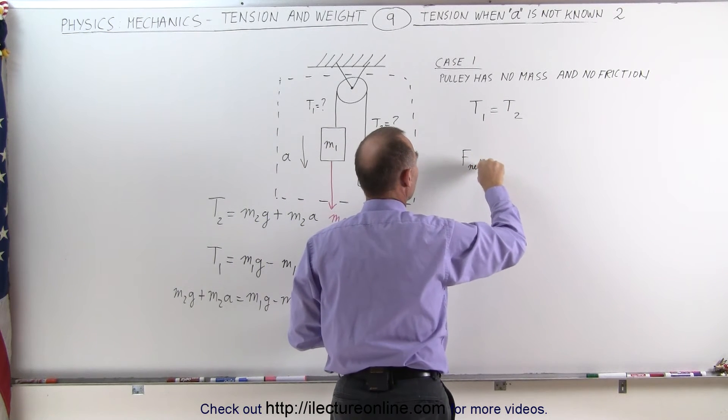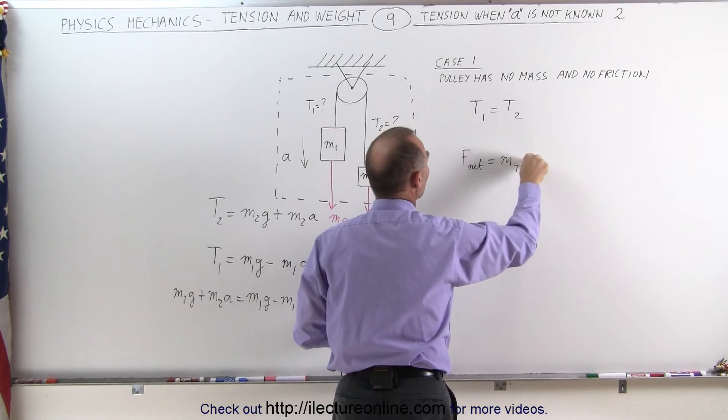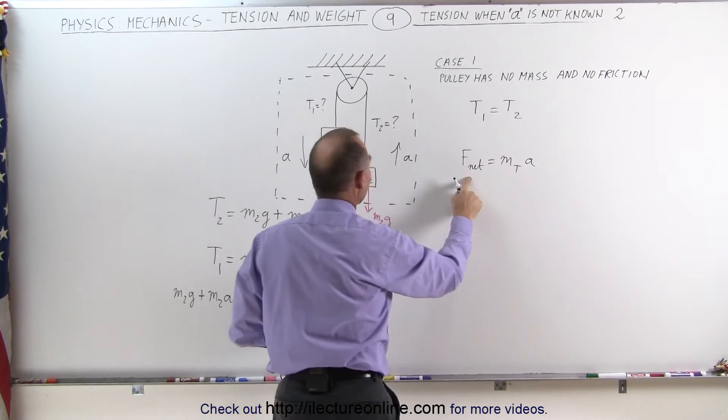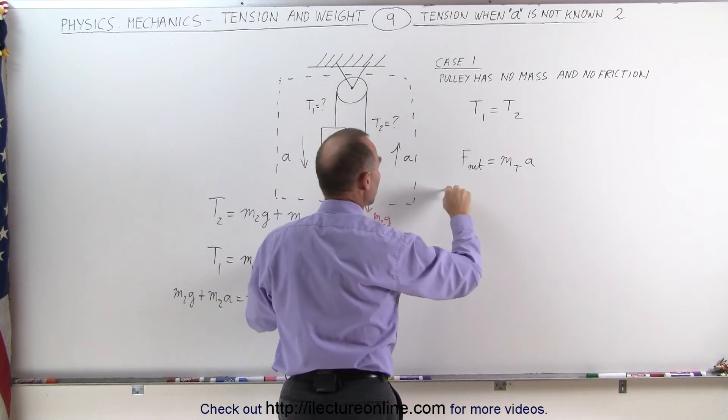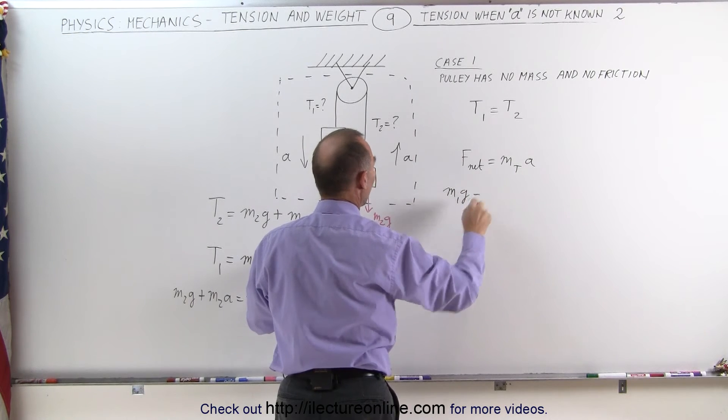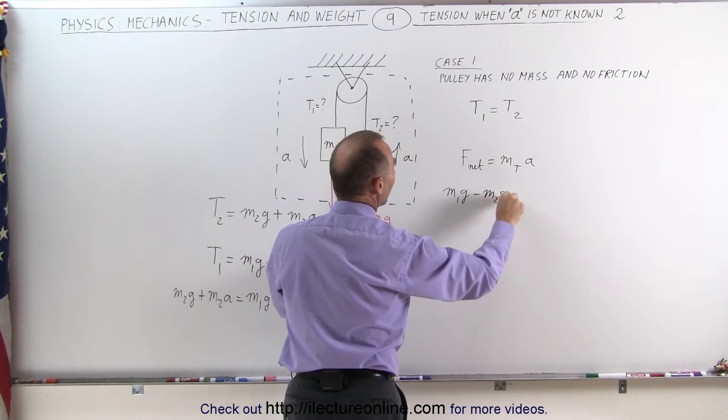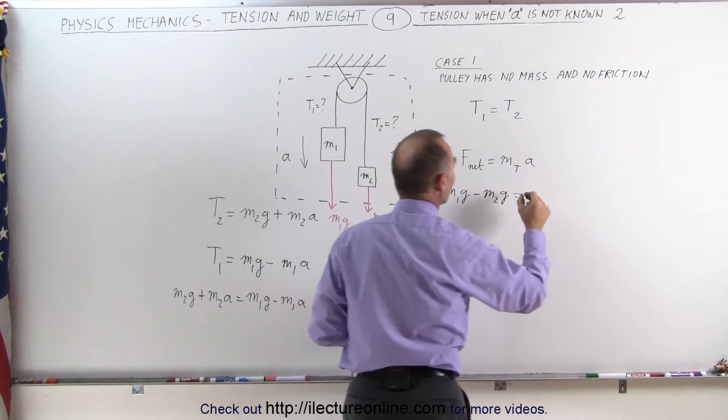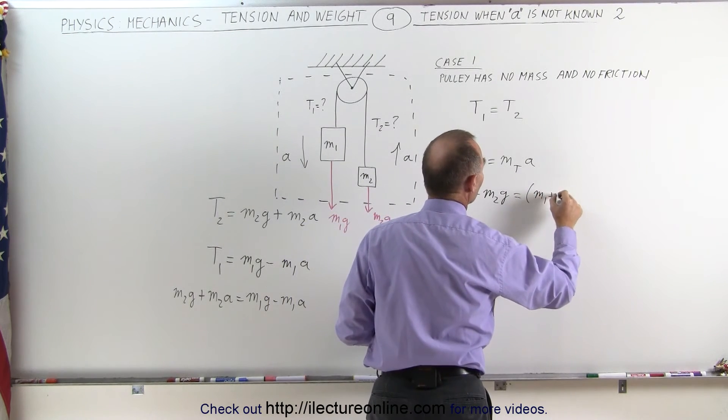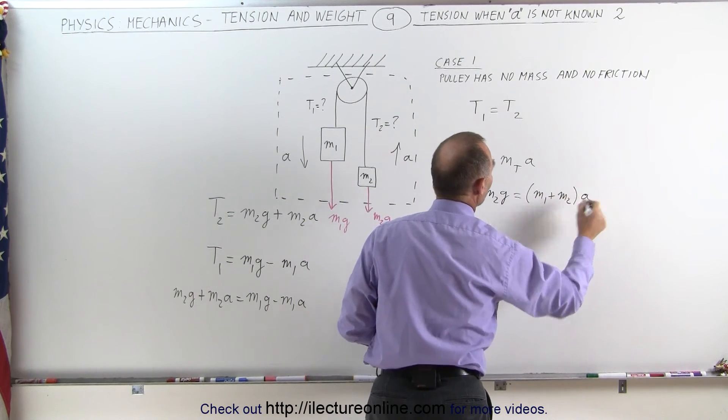And the net force is going to be M1G, the larger of the two forces, minus M2G, the smaller of the two forces, which is equal to the total mass M1 plus M2 times acceleration of the system.